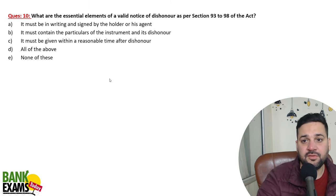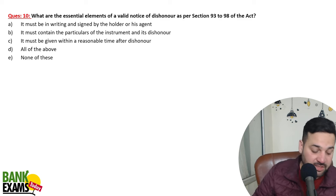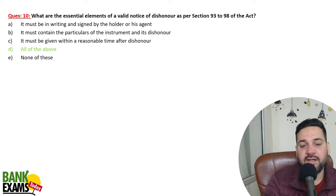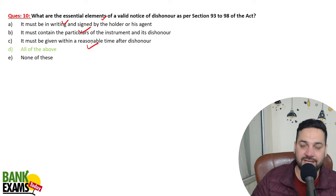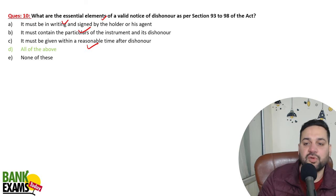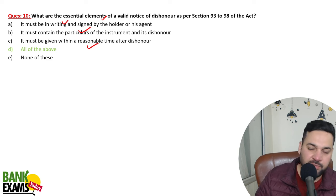What are the essential elements of a valid notice of dishonor as per Sections 93 to 98? It must be in writing and signed by the holder. It must contain the particulars of the instrument. And it must be given within a reasonable time. All these elements must be present for the notice of dishonor to be valid.